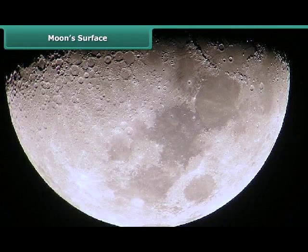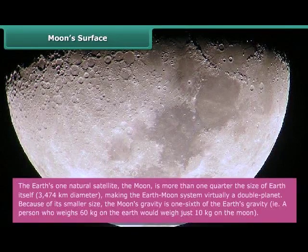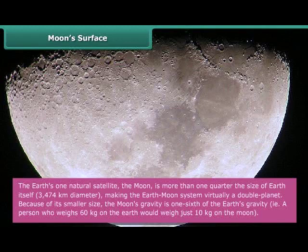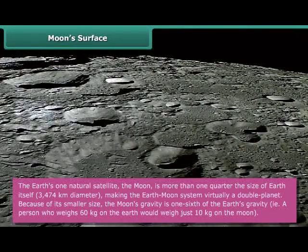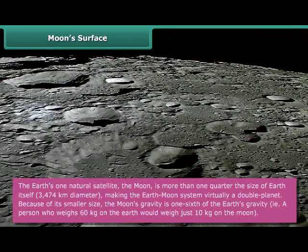The Earth's one natural satellite, the Moon, is more than one quarter the size of Earth itself, 3,474 km in diameter, making the Earth-Moon system virtually a double planet. Because of its smaller size, the Moon's gravity is one-sixth of the Earth's gravity. That is, a person who weighs 60 kg on the Earth would weigh just 10 kg on the Moon.